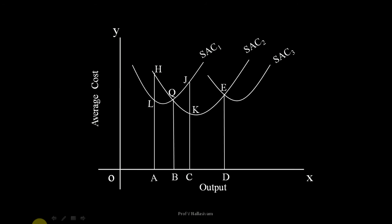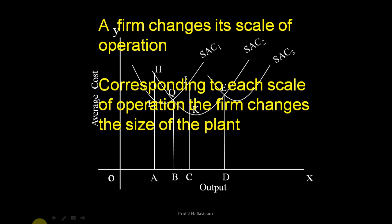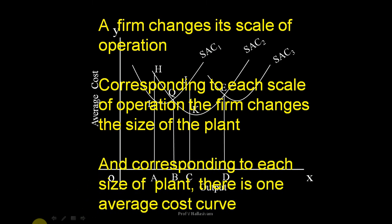Important points. In the long run, all factors are variable. A firm changes its scale of operation. Corresponding to each scale of operation, the firm changes the size of the plant. And corresponding to each size of plant, there is one average cost curve.